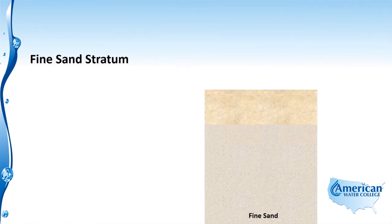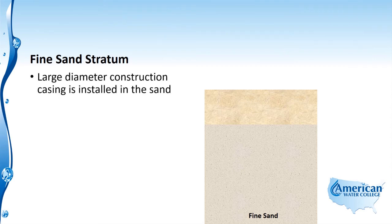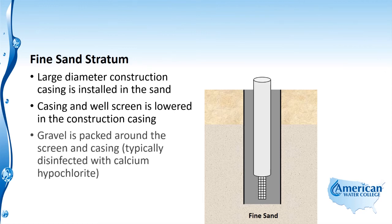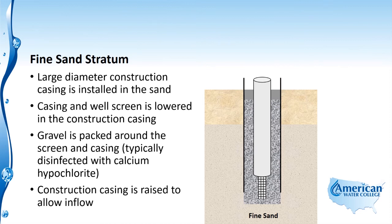The last type is drilling a well into sand. A large diameter construction casing is installed into the sand, and then the casing and well screen are lowered into the construction casing. Gravel is packed around the screening casing and is typically disinfected with calcium hypochlorite. Since it's difficult to disinfect the gravel packing, granular calcium hypochlorite is added in with the gravel pack as a means of disinfecting it. Then the construction casing is raised to allow inflow.